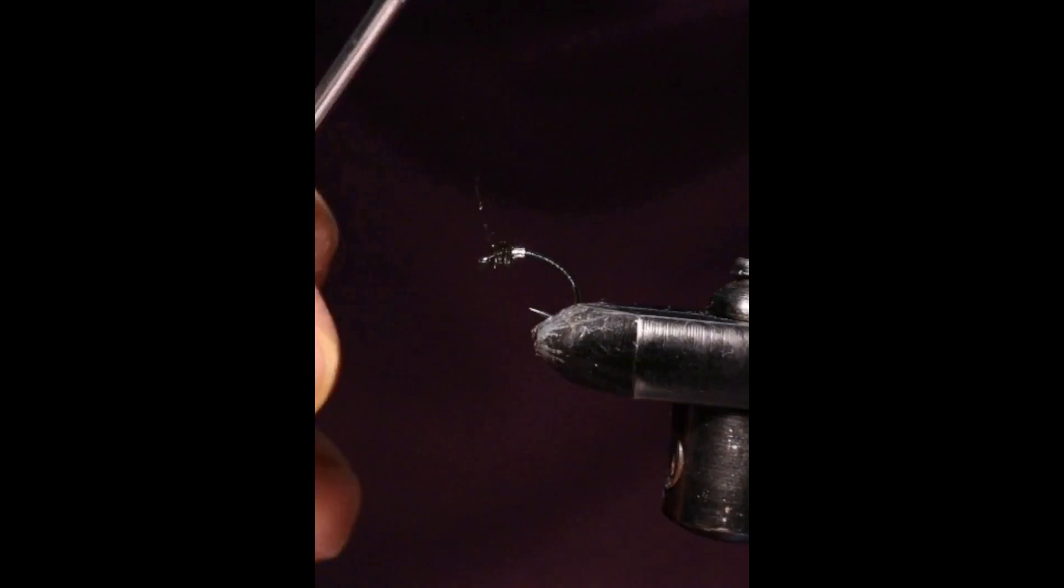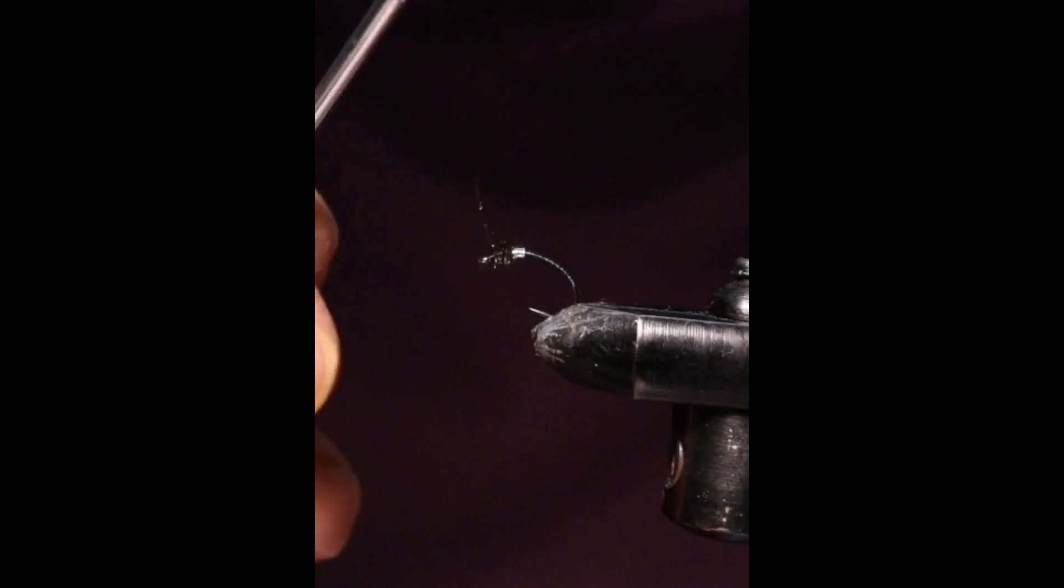Get yourself some nail varnish, put a small amount on the thread, and then tie that in to secure the head, whip that off, and then snip that off, and away you go, and you can make it into various colours.